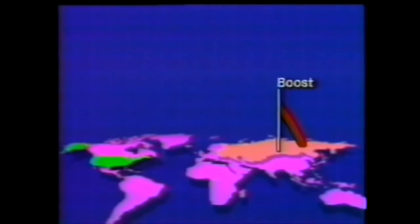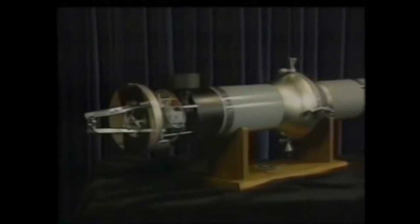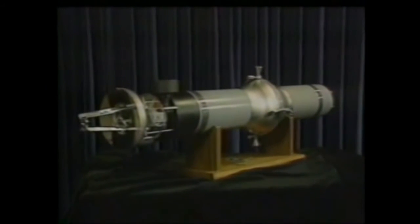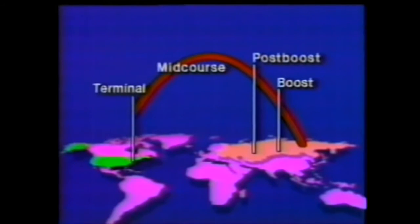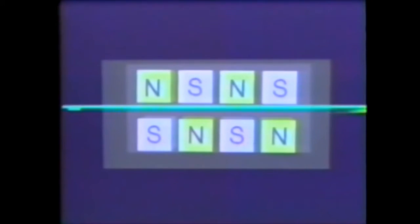Phase 1 has come to focus on boost and post-boost, as well as mid-course defense. In both cases, we are looking at KEWs, or kinetic energy weapons. The KKVs, or kinetic kill vehicles, carry no explosive warheads of any kind. Phase 2 focuses more on the mid-course and terminal threat through the use of DEWs, or directed energy weapons — speed-of-light weapons involving such technologies as neutral particle beams, free electron lasers, and chemical lasers.